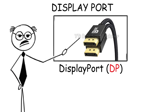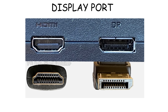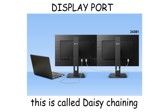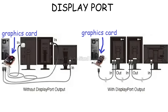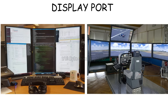DisplayPort, or DP, is a digital display interface like HDMI, but it's mainly designed to connect a computer to a monitor. The connector looks similar to HDMI, but it has one corner cut at an angle. What really sets DisplayPort apart from HDMI is its ability to daisy-chain monitors. This means you can connect multiple screens in a series using just one DisplayPort output from your computer, instead of plugging in a separate cable for each monitor — which is beneficial for professional video editors, coders, or even for flight simulation.